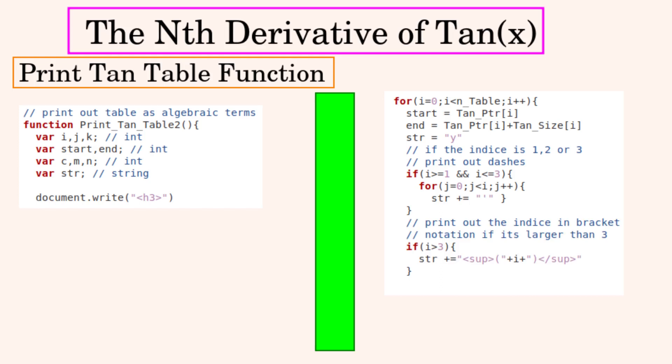If it's the fourth derivative or greater then we'll write in the number as an indice in brackets. Then we'll write the equals sign. This is extremely obvious.